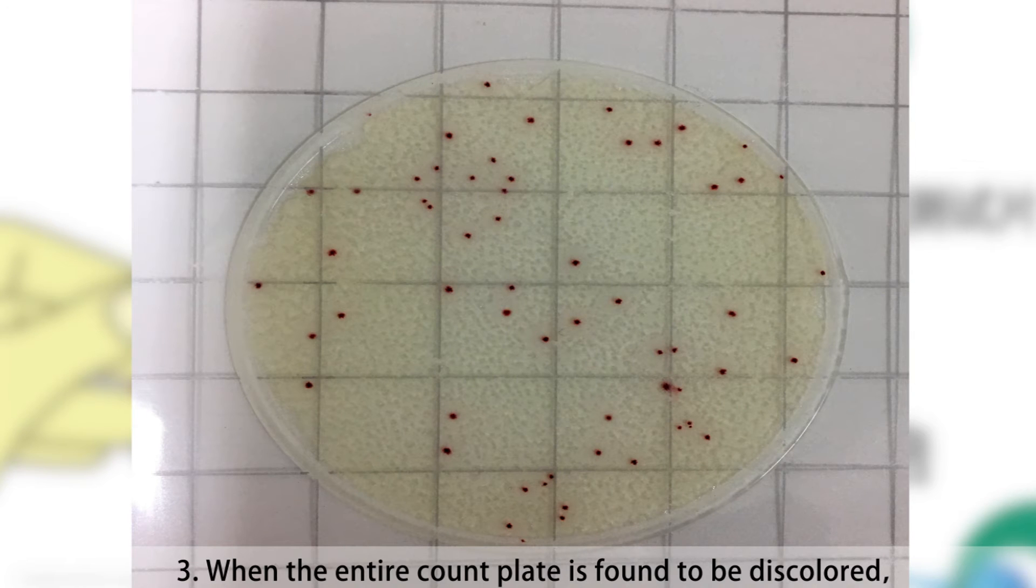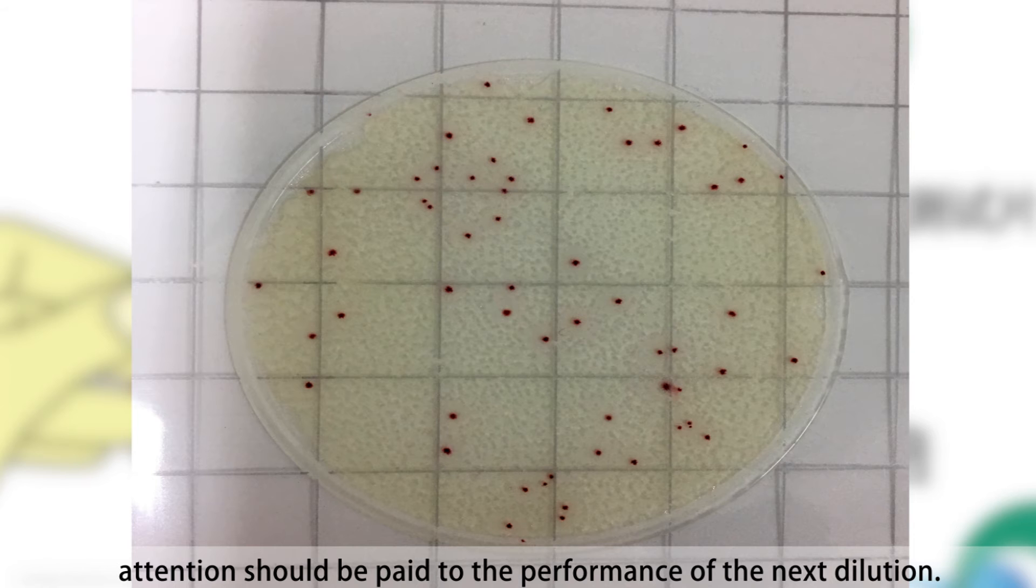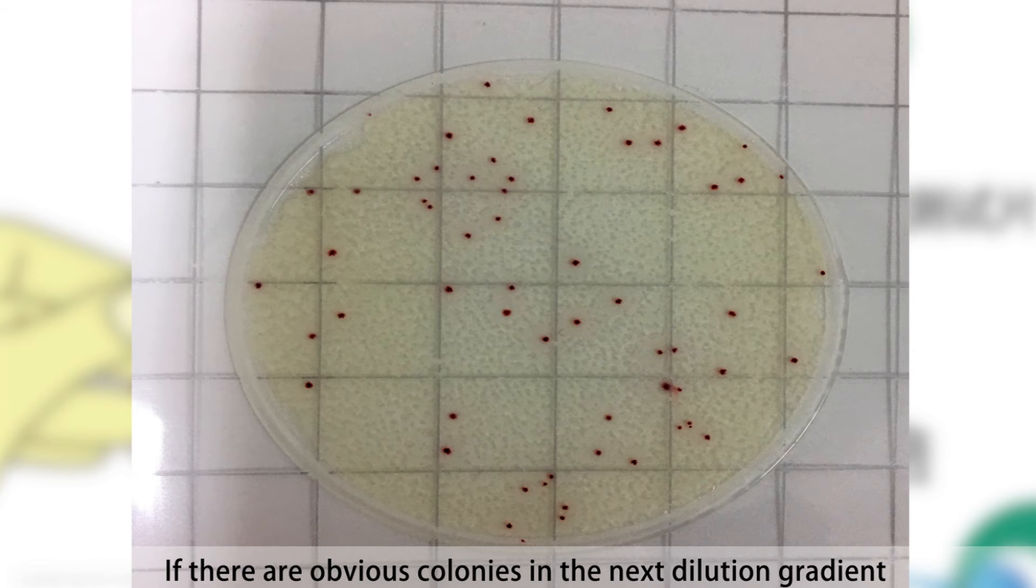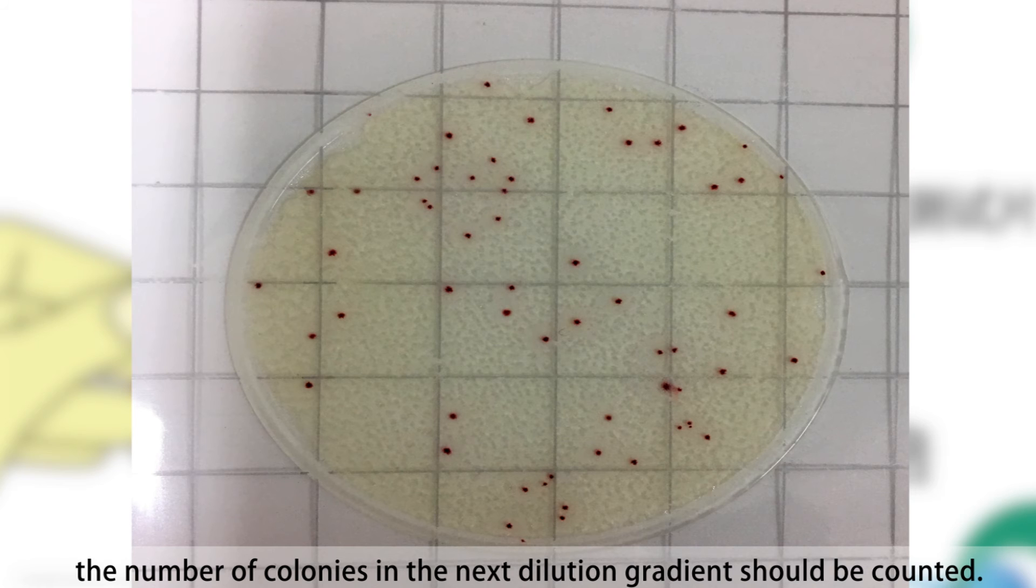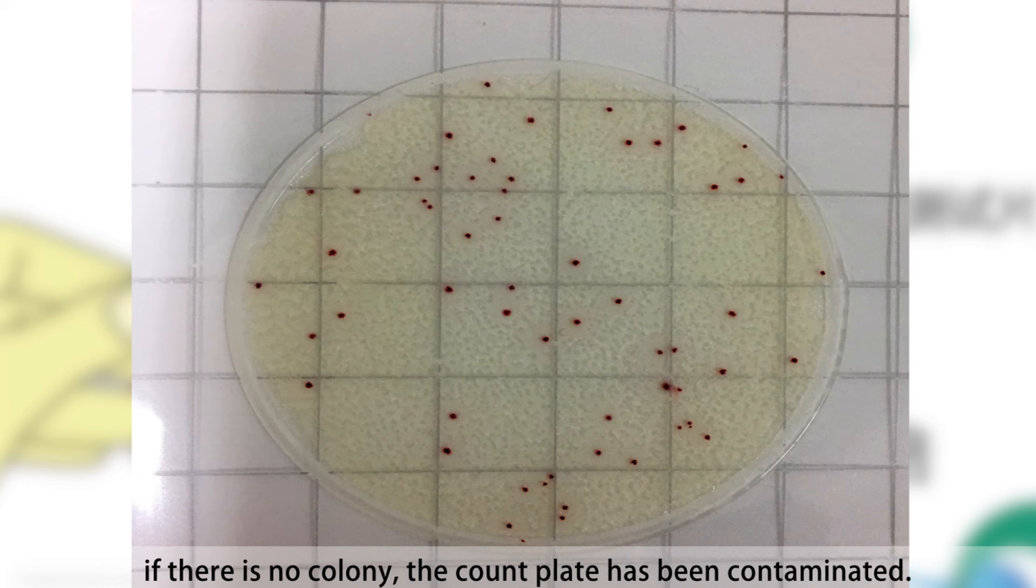Third, when the entire count plate is found to be discolored, attention should be paid to the next dilution. If there are obvious colonies in the next dilution gradient and within the optimal range, the number of colonies in the next dilution gradient should be counted. If there is no colony, the count plate has been contaminated.